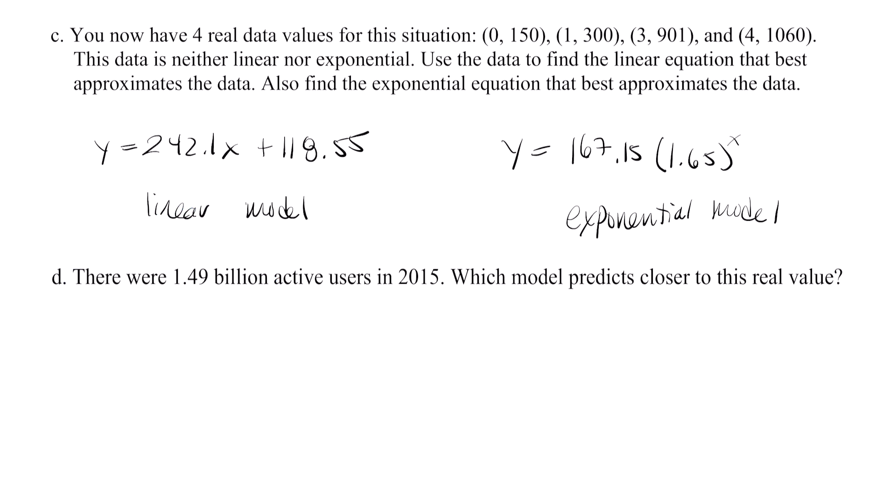Part D. There were 1.49 billion users in 2015. Which model predicts closer to this real value? So 2015 is six years after 2009. So our point here is 6, 1,490. First let's test the linear model, then the exponential model.